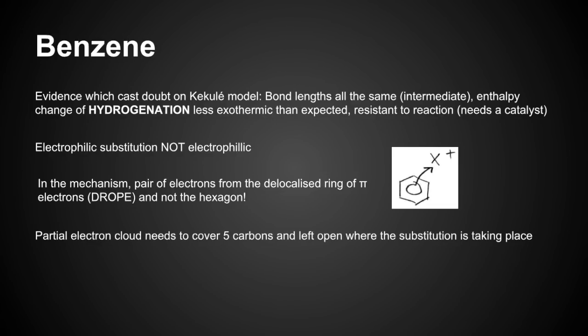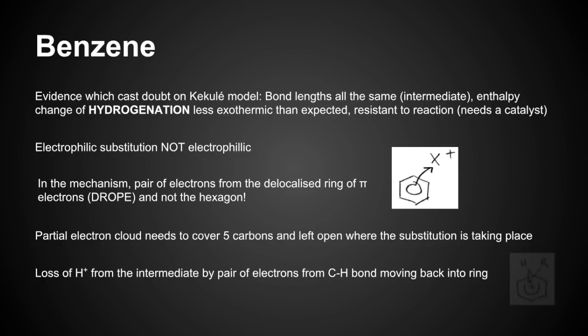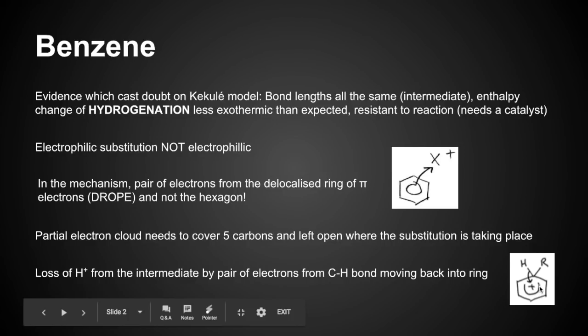Once that's happened, your partial electron cloud needs to cover five carbons, and you leave it open where the substitution's taken place. I'll show you a picture in a second. The loss of the H-plus from that intermediate is by a pair of electrons from the CH bond, and it goes back into the ring. There's your five carbons covered, the positive charge in the middle. The pair of electrons comes from this bond, not from that hydrogen, which I see quite a lot.